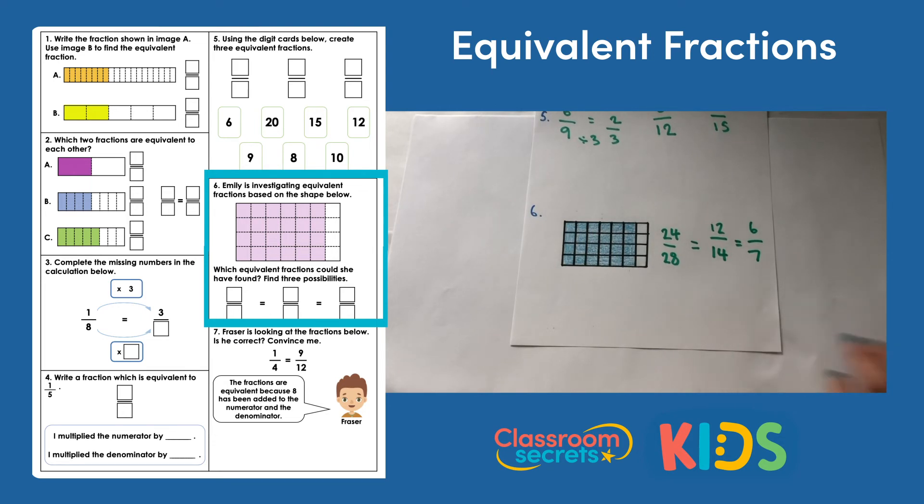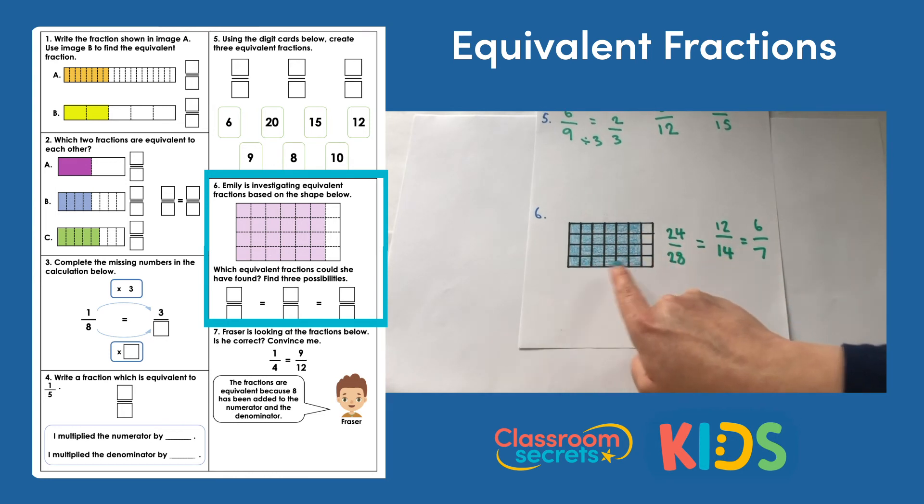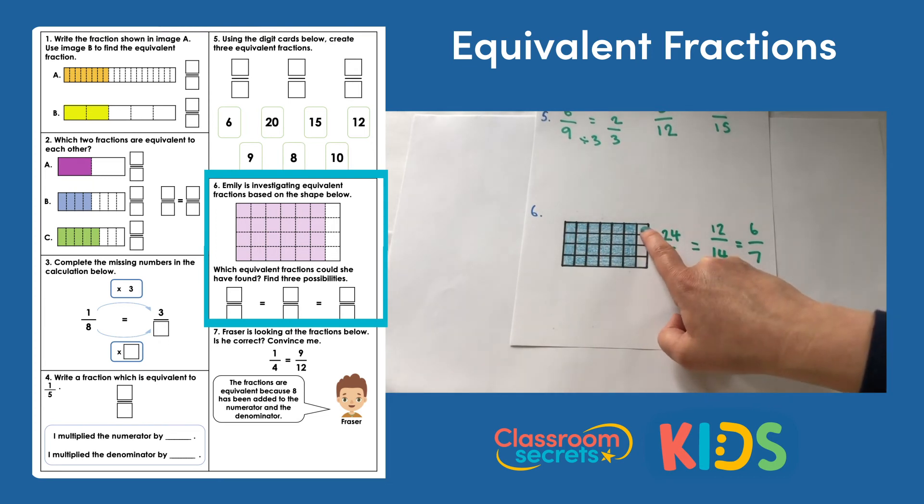Something else that you could have done which would also be correct. You could have actually looked at the part that isn't shaded, because it doesn't specify in the question that we're only focusing on the shaded area. So you could have identified that there are 4 28ths not shaded and then found your equivalence based on that.